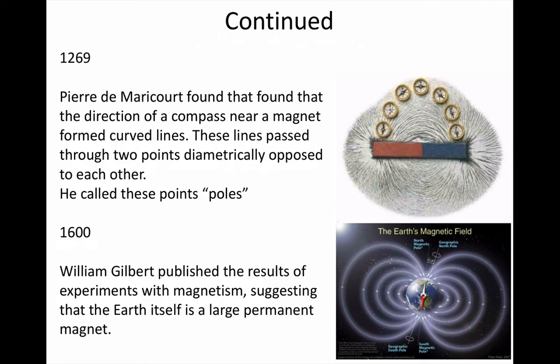Then, in 1600, William Gilbert first suggested that the earth itself acted as a large permanent magnet. He also found that red-hot iron lost its magnetism and only regained it when it cooled down.